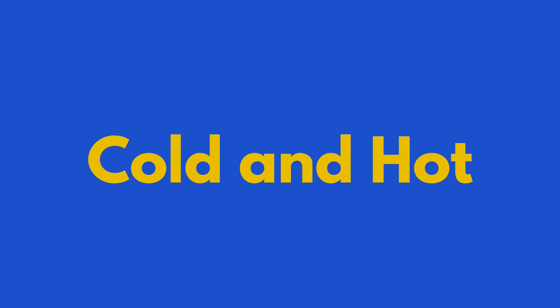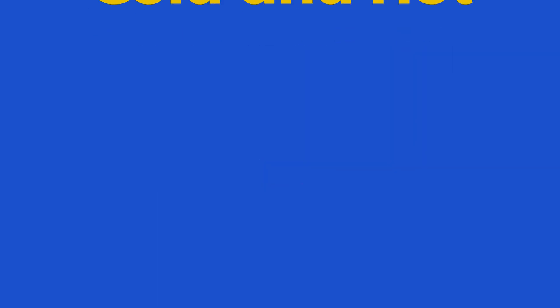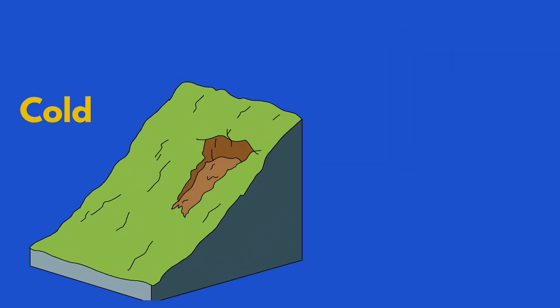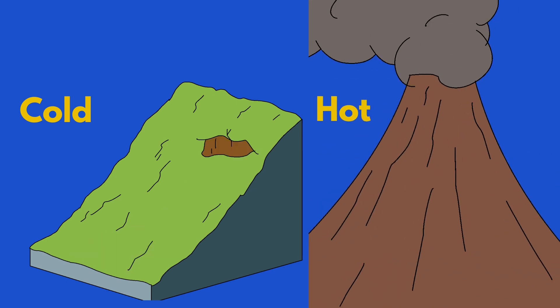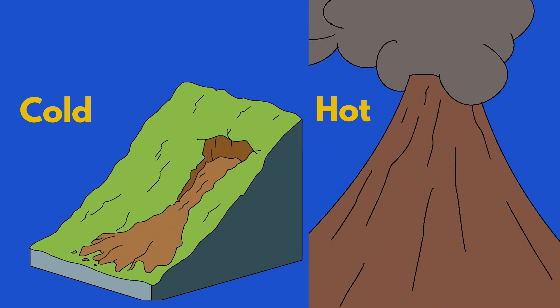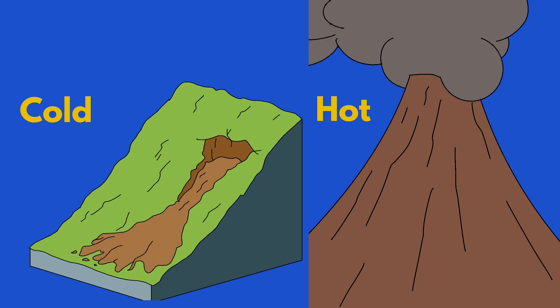There are two general types of debris avalanches: cold and hot debris avalanches. Cold debris avalanches usually result from a slope becoming unstable, while hot debris avalanches are the result of a volcanic hazard such as an earthquake.